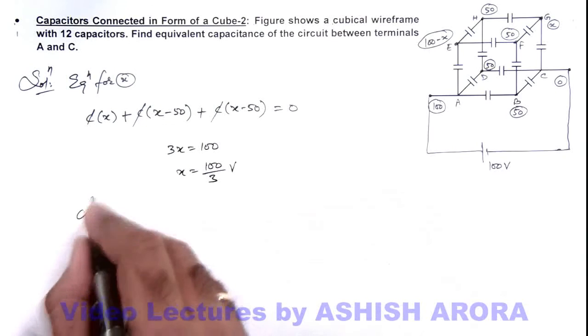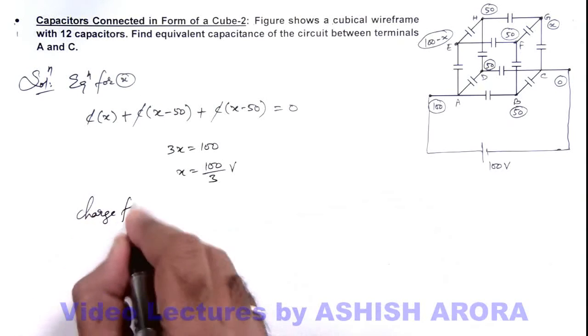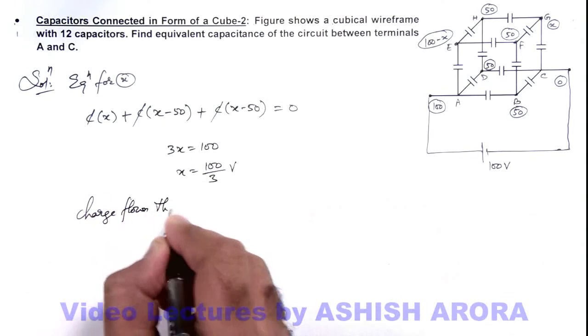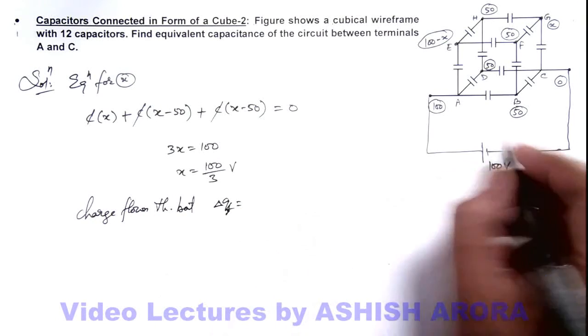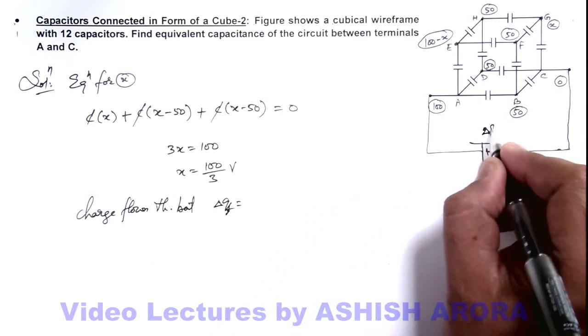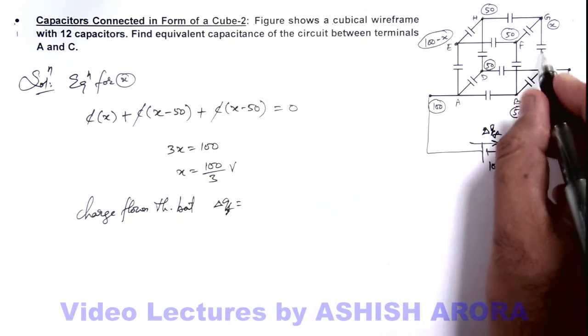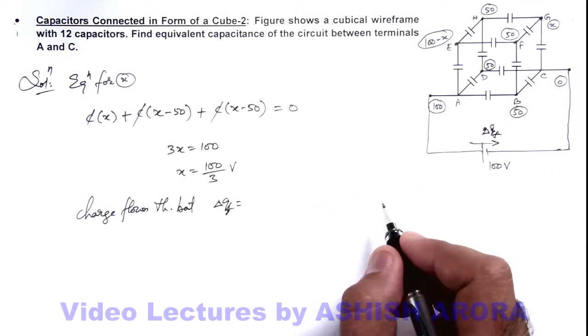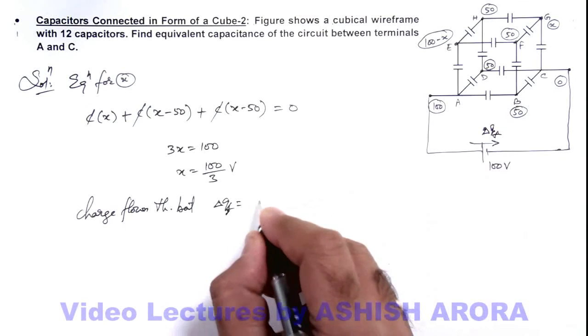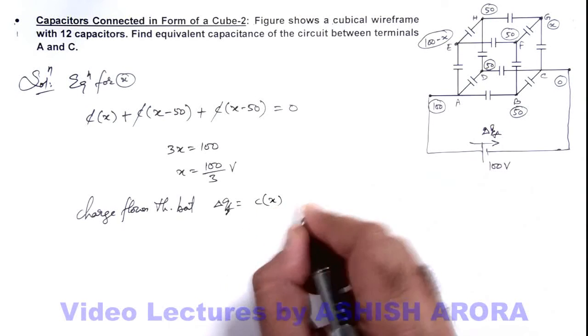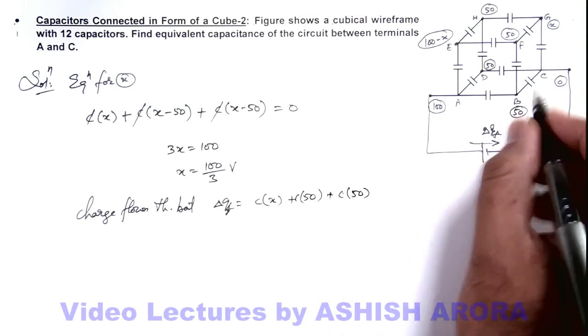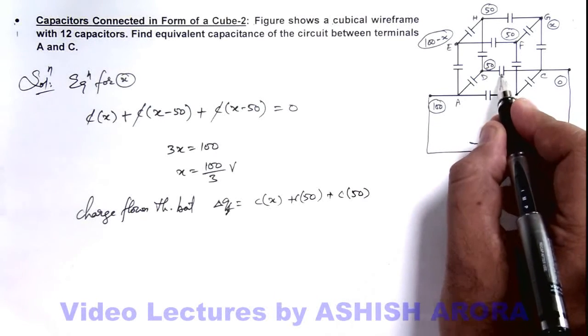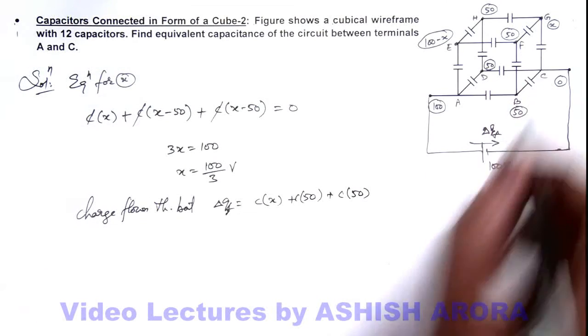Now we can find out the charge flown through battery, which is delta q_f. The amount of charge which is flown through battery will be deposited on these three capacitors. So this can be written as C multiplied by x, plus C multiplied by 50, plus C multiplied by 50, because these two capacitors are having a potential difference of 50 volt and this is Cx.